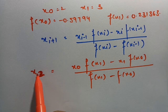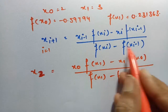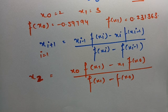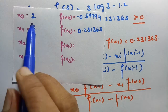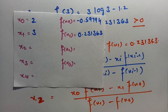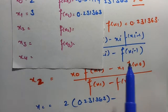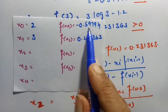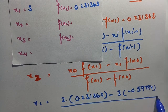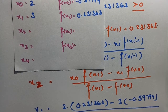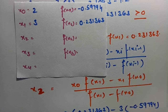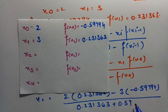If you want x₂, keep i = 1 in the whole equation and you'll get the same thing. Every time subtract 2 from the desired subscript. So x₂ = x₀·f(x₁) − x₁·f(x₀) divided by f(x₁) − f(x₀). Substituting: x₀ = 2, f(x₁) = 0.231363, x₁ = 3, f(x₀) = −0.59794. Note that minus of minus becomes plus in the denominator.